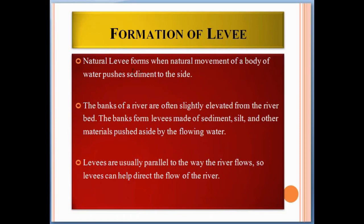Regarding the formation of levees: a natural levee forms from the natural movement of a body of water depositing sediment to the side. The banks of a river are often slightly elevated from the river bed. These banks form levees made of sediment, silt, and other materials deposited by the flowing water. Levees are usually parallel to the way rivers flow.